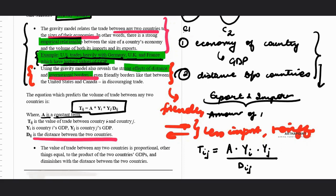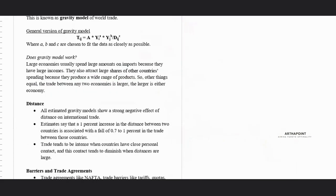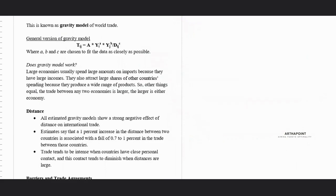So let's read this out. The value of trade between any two countries is proportional, other things equal, to the product of two countries' GDP and diminishes with the distance between the two countries. This is known as the gravity model.